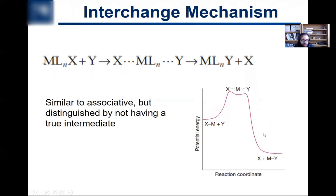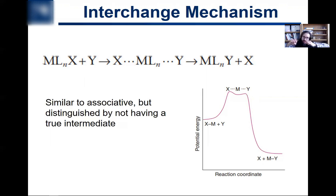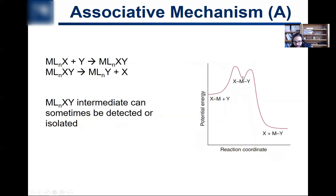The interchange mechanism is the third mechanism, very similar to the associative mechanism but without a true intermediate. The transition state complex is written with dashed bonds — no true bonds are formed. As the incoming ligand approaches, the leaving group moves away; they happen in concert. It's a concerted mechanism, called I. Because there's no true intermediate, you can never isolate or detect it classically. The reaction coordinate shows changes at the top but no deep dip like the stable intermediates in the A and D mechanisms.